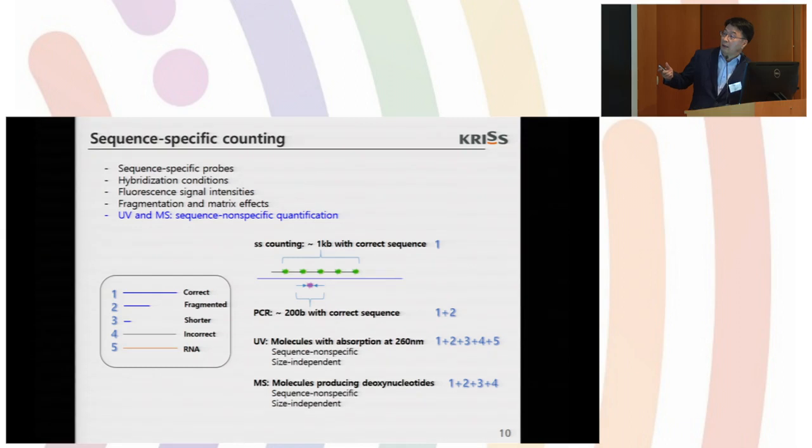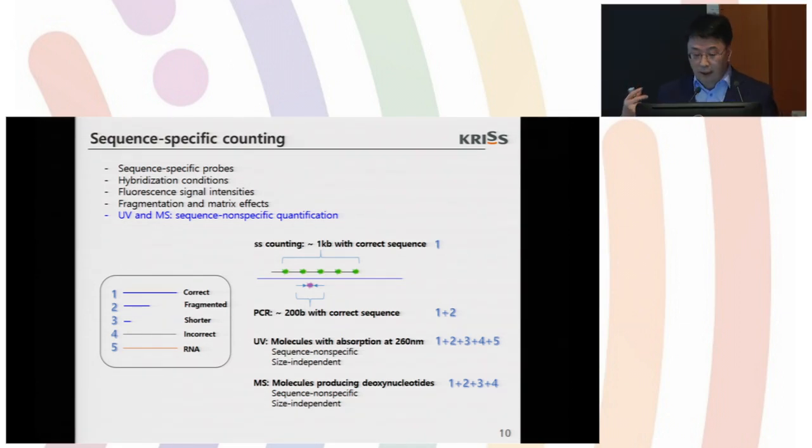So let's imagine, let's think about the imaginary sample. There are five DNA and RNA species. One is correct, long and correct. The second is correct but fragmented. Third one is very short. And number four is long but wrong, incorrect. And number five is RNA. If we apply sequence-specific counting for this sample, we will detect and quantify only number one. If we apply PCR technology, number one and number two will be quantified, detected and quantified. If we apply UV, UV will detect and quantify all the molecules here. And mass spectrometry will detect except for number five. So it is important to note that comparison of different methods dependent on fragments and impurity in the sample.